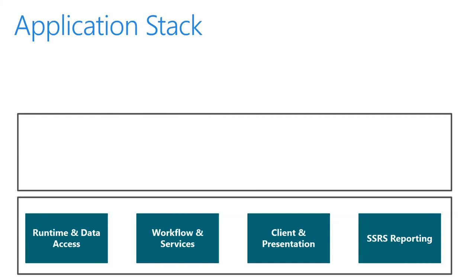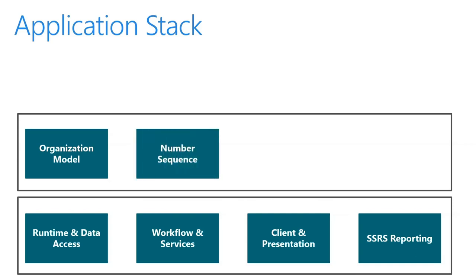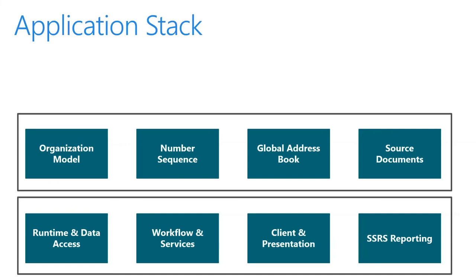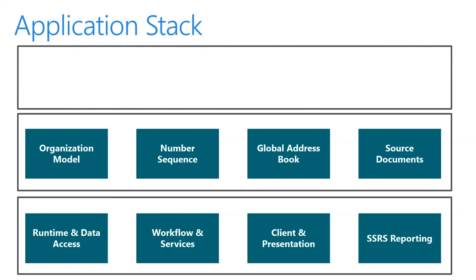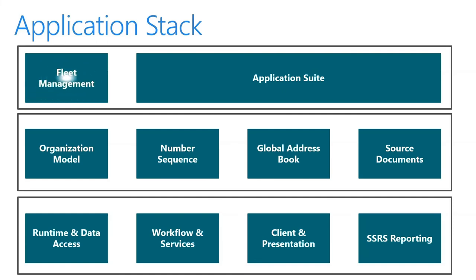The application platform technology is used to support the core functions of 365 for Finance and Operations, and the Application Suite is built upon it. This includes things like the organization model, which supports visual modeling of your organization entities such as units and departments; number sequences, which support logical numbering for your data and documents; the global address book, which is designed to centralize and share address information for various entities; and source documents, the framework which supports documents such as purchase orders and free text invoices. Finally is the Application Suite, which is rich in functionality including financial management, inventory and warehouse management, human resources, and much more. The application can also be extended to include customized applications, which we will be doing throughout this course with examples from Fleet Management.